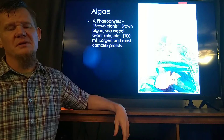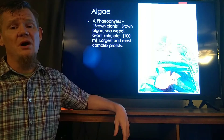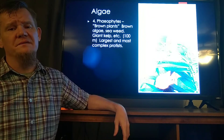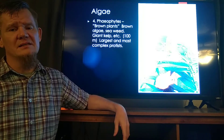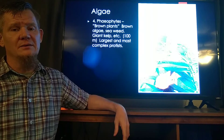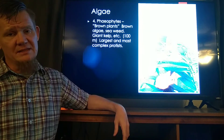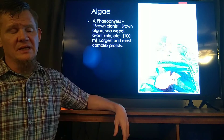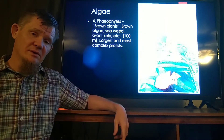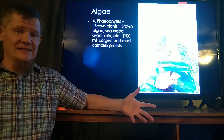Protists are protists because they don't belong to the other categories. They're too complicated to be bacteria, but not complicated enough to be plants, animals, or fungi. So we talk about them in categories: the ones that are most like plants, the ones that are most like animals, and the ones that are most like fungi. Right now we're talking about the ones that are most like plants, and those are algaes.